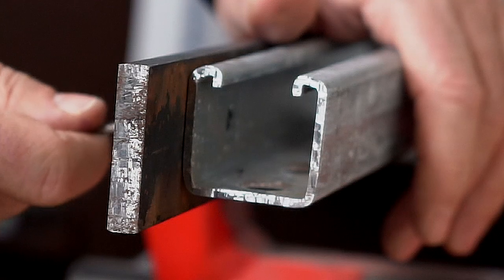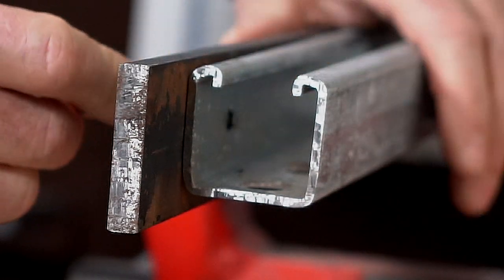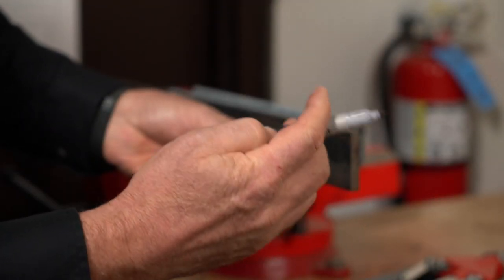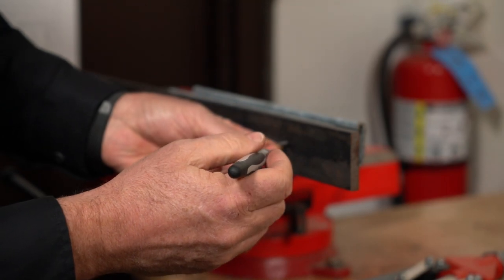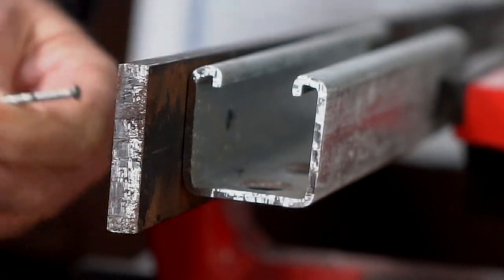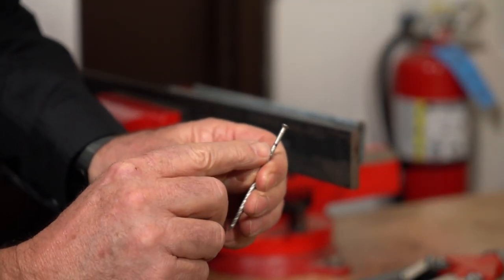You put the nail in the hole and pull it. Take a sharpie or marker, pull up on it, and put a mark on your nail. You see there's the mark.